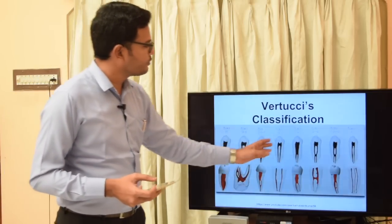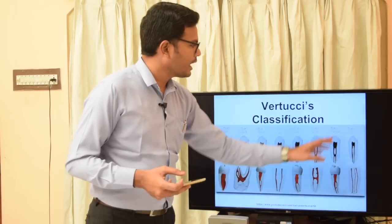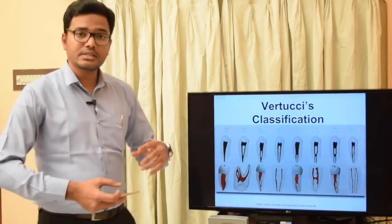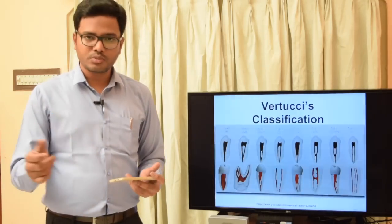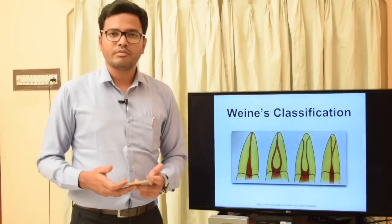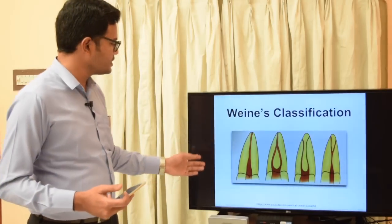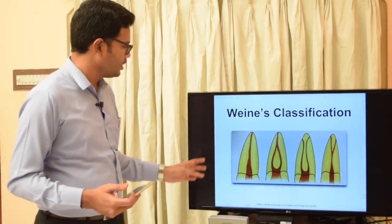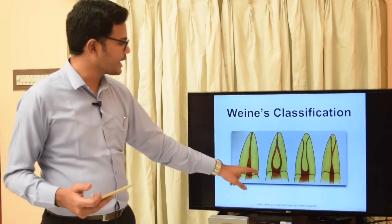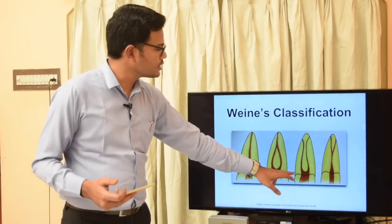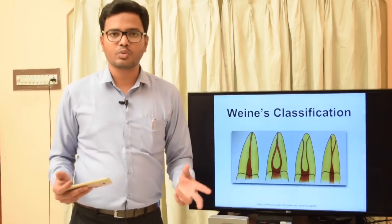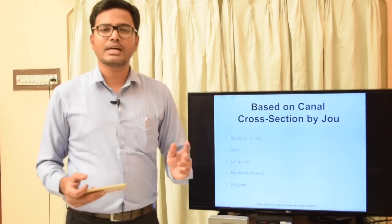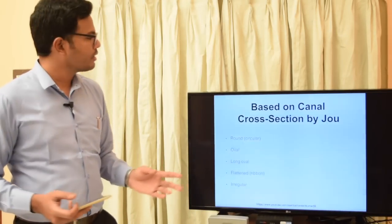Weine's classification has four types of canal configurations: type one is a single canal (1); type two is two canals joining into one (2-1); type three has two separate exits (2-2); and type four is one canal bifurcating into two, exiting as two different foramina (1-2). There is also a classification by Jou et al. based on canal cross-sectional shape: round, oval, long oval, flattened or ribbon, or irregular configuration.